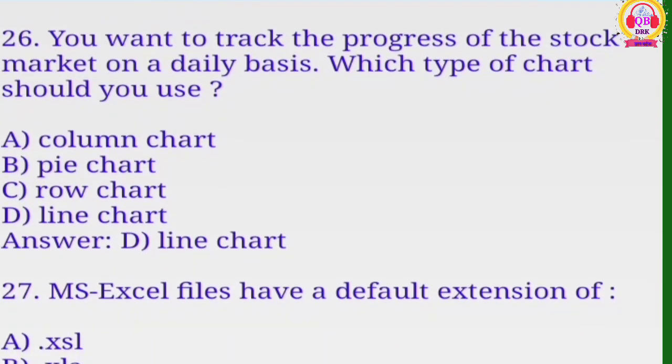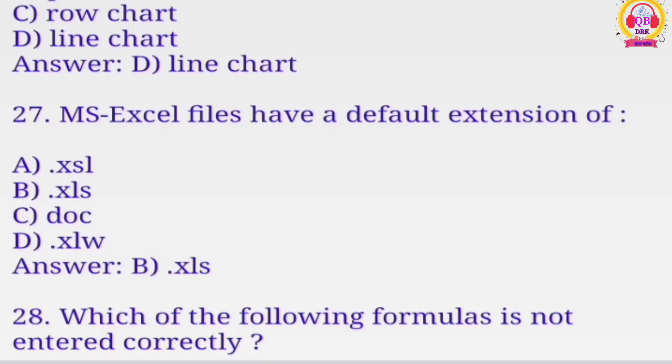You want to track the progress of the stock market on a daily basis, which type of chart should you use? ABCD, correct option is D, line chart. MS Excel file have a default extension of ABCD, which is correct? B is the correct.